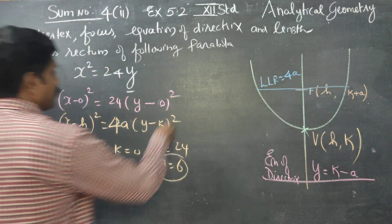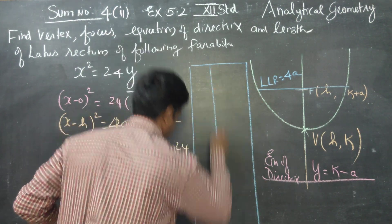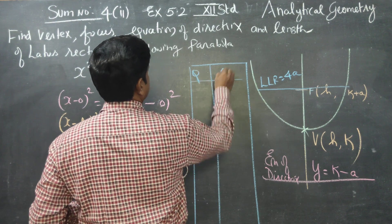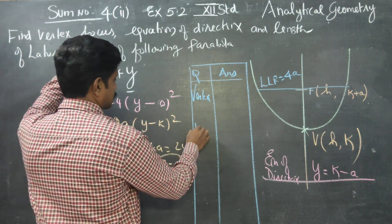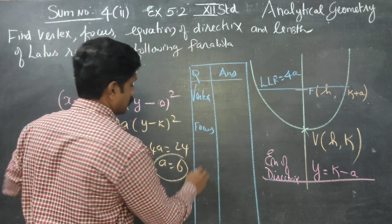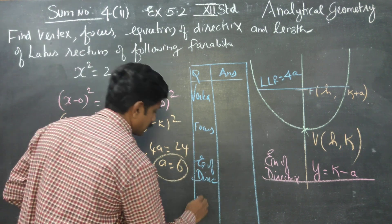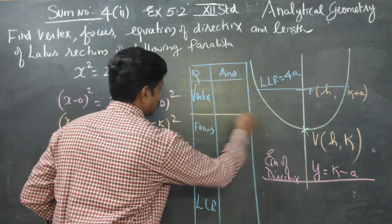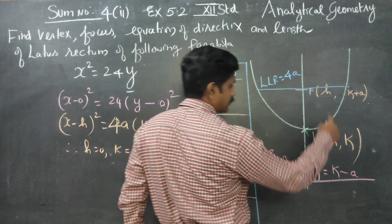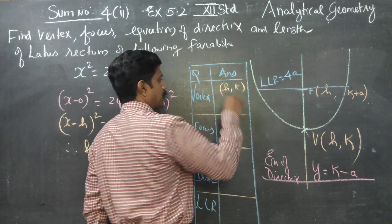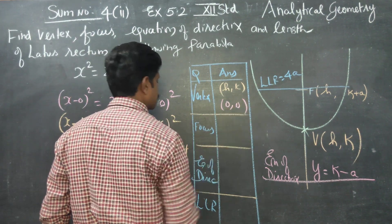Then, finding each and every value. My first question is vertex. The vertex formula is h comma k. My h is 0, k is 0. Therefore, my answer is (0, 0).